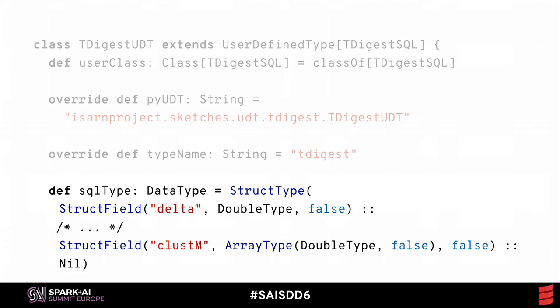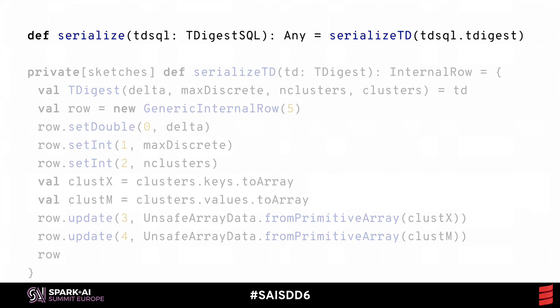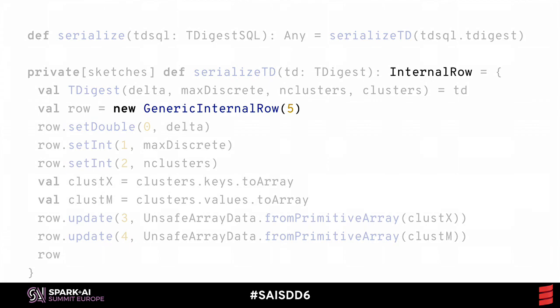The SQL type method tells Spark about the working row schema that stores my custom aggregation data structure, defined the way you typically define schemas in Scala. Spark needs to know how to store my working structure in a data frame row, and so the serialize method encodes this logic. Serialize returns another subtype of row, and it creates yet another subtype internally to present to Spark's logic.